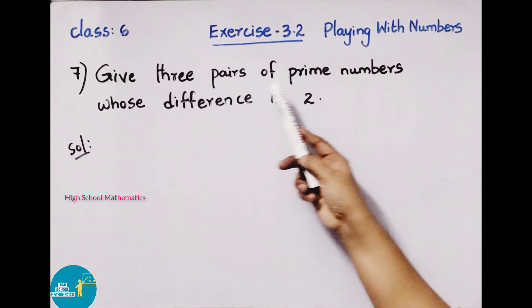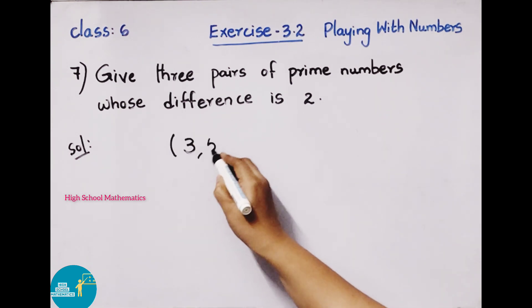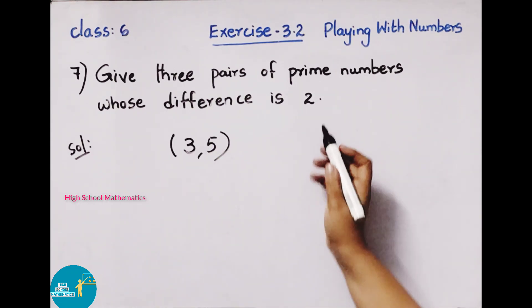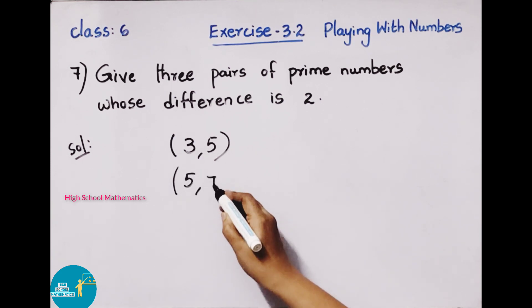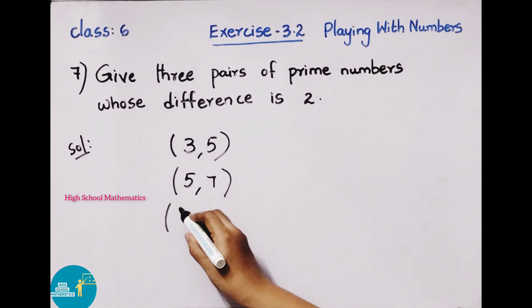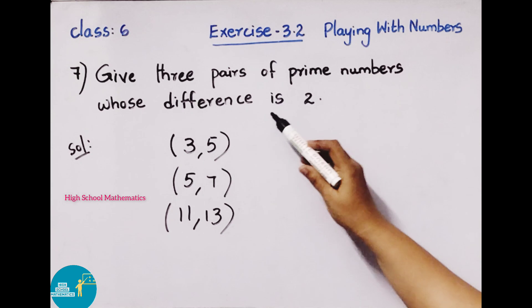Next, 7th question. Give 3 pairs of prime numbers whose difference is 2. We need 3 pairs of prime numbers. One pair of prime numbers is 3 and 5. What's the difference? 2. Next, another pair is 5 and 7. The difference is 7 minus 5 equals 2. Next pair: 11 and 13. 13 minus 11 equals 2. These are the 3 pairs of prime numbers whose difference is 2.